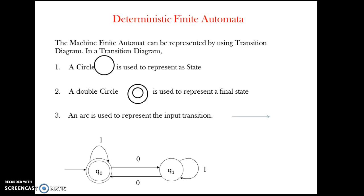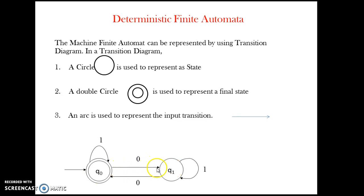DFA can be represented using a transition diagram or a transition table. In a transition diagram there are three different symbols: a circle representing a state, a double circle representing an acceptance state, and an arc representing the input transition. In the example, there are two different states: Q0 and Q1.